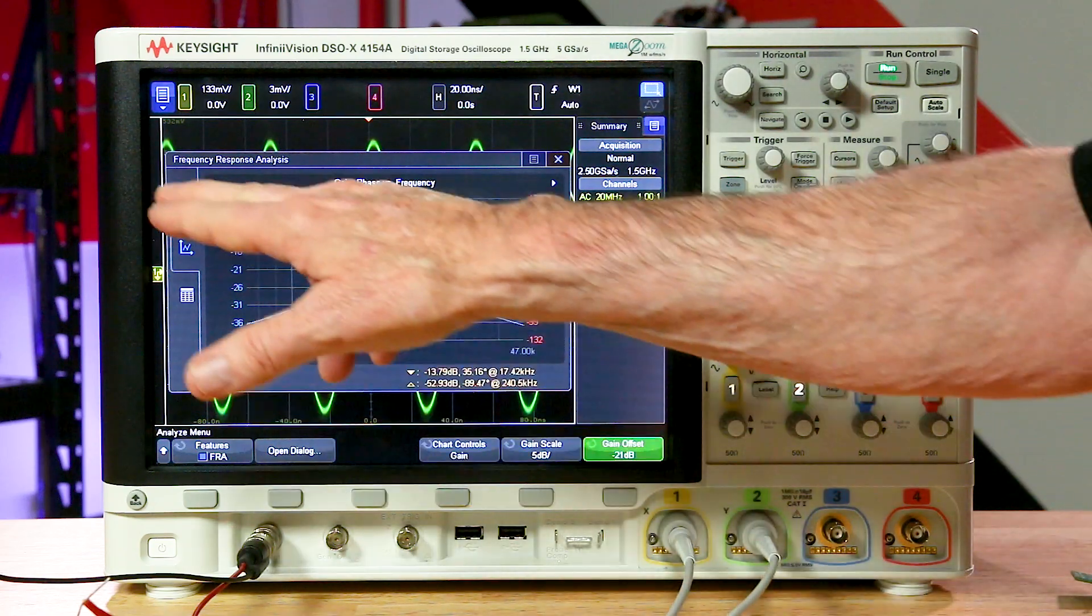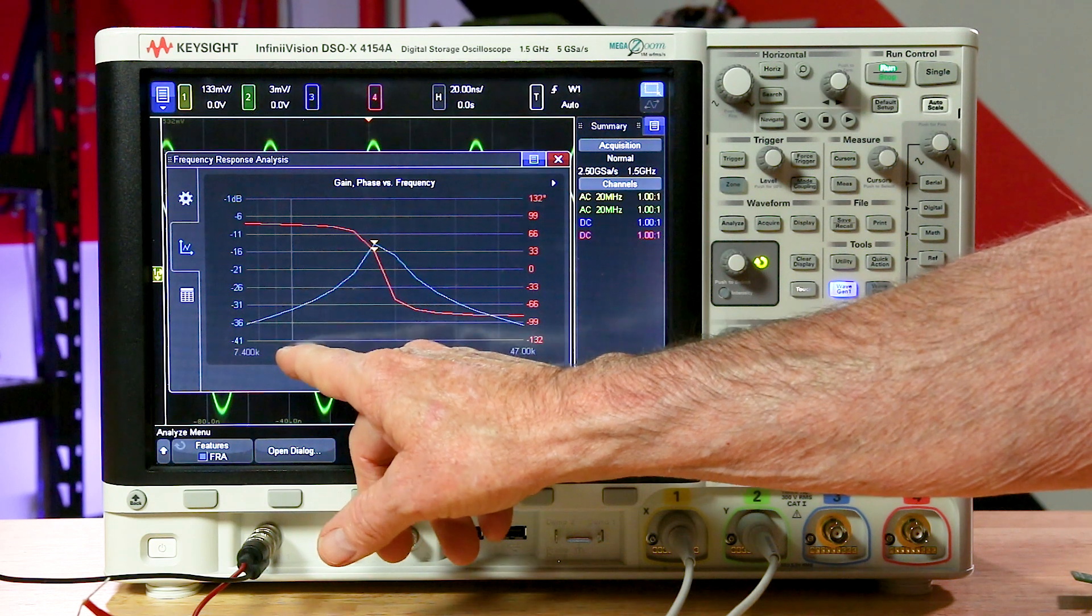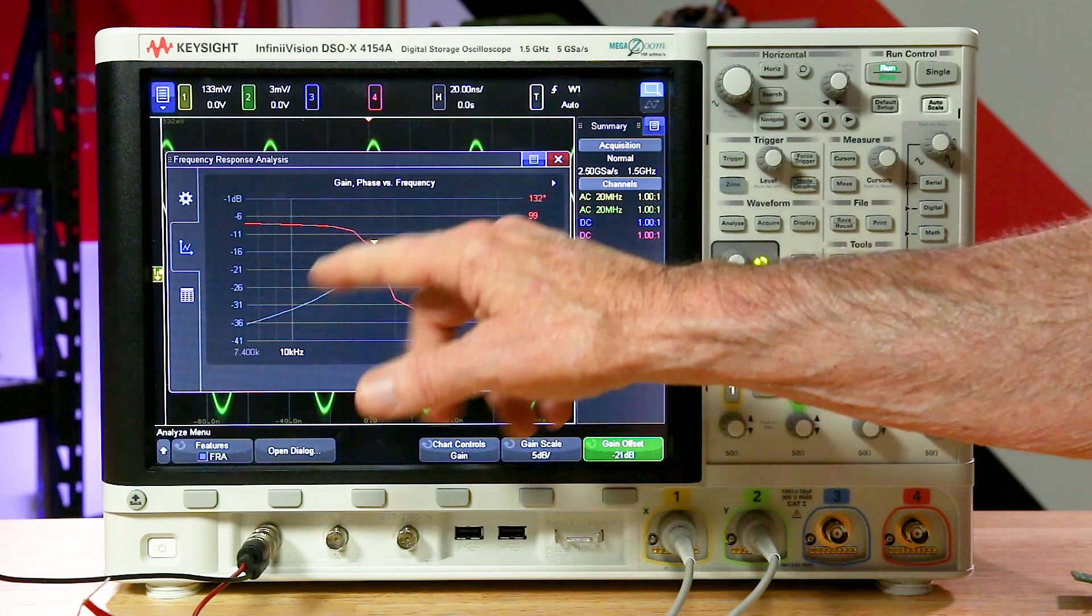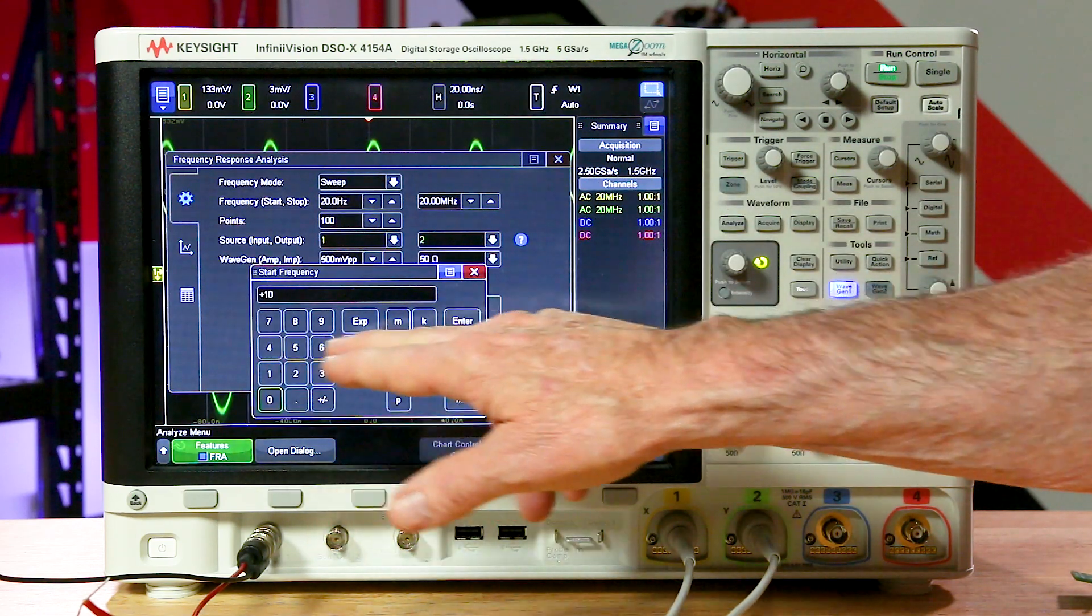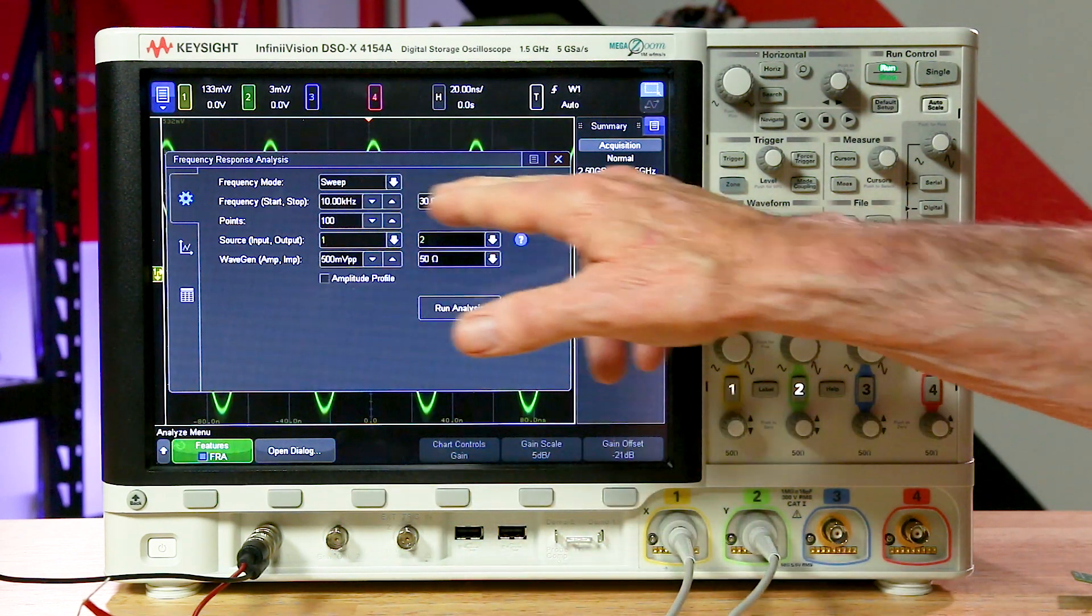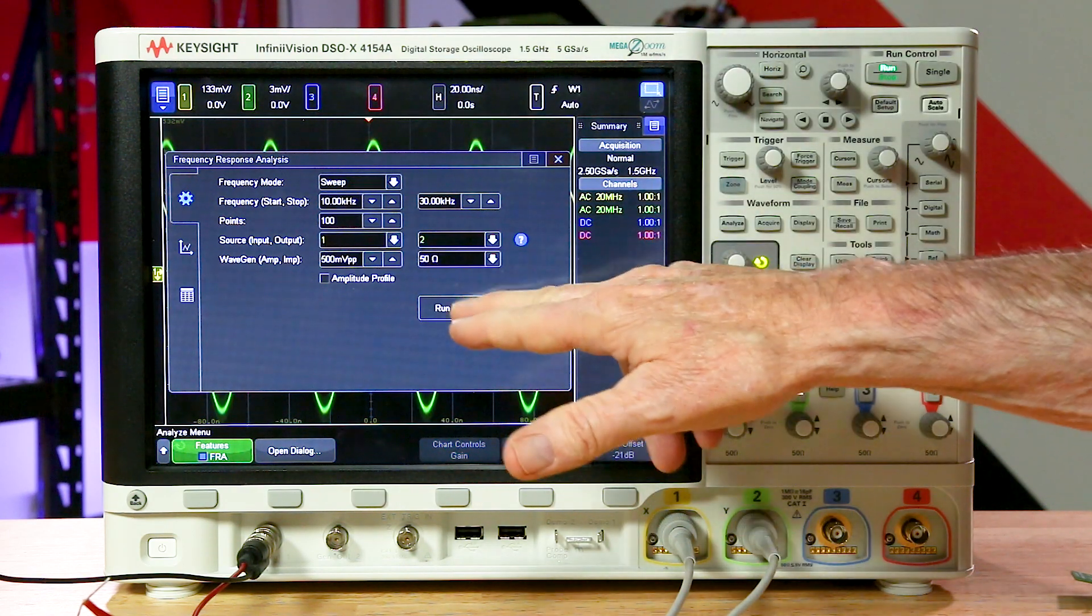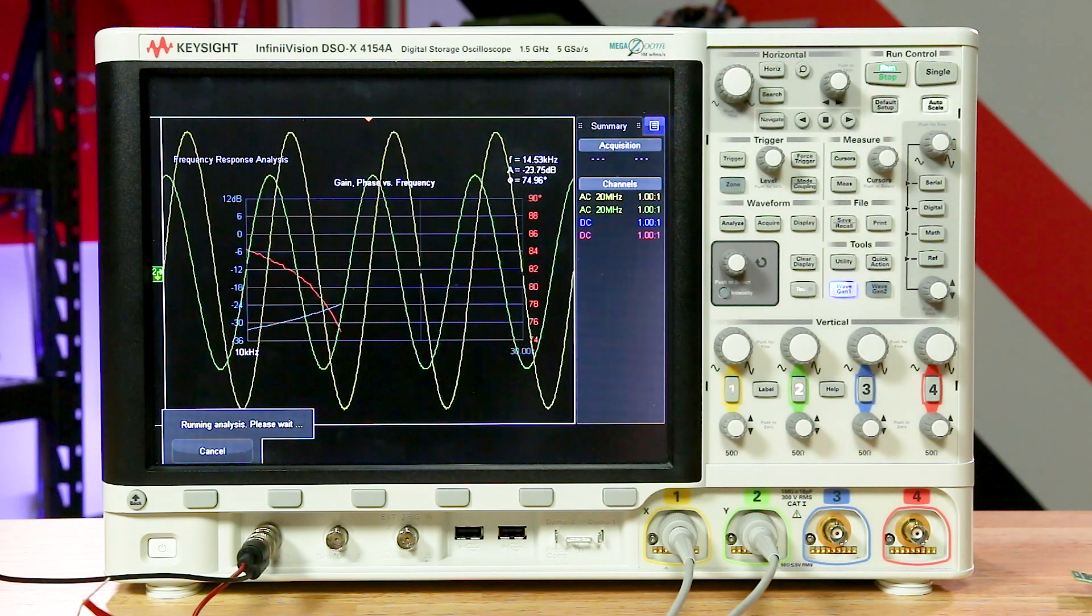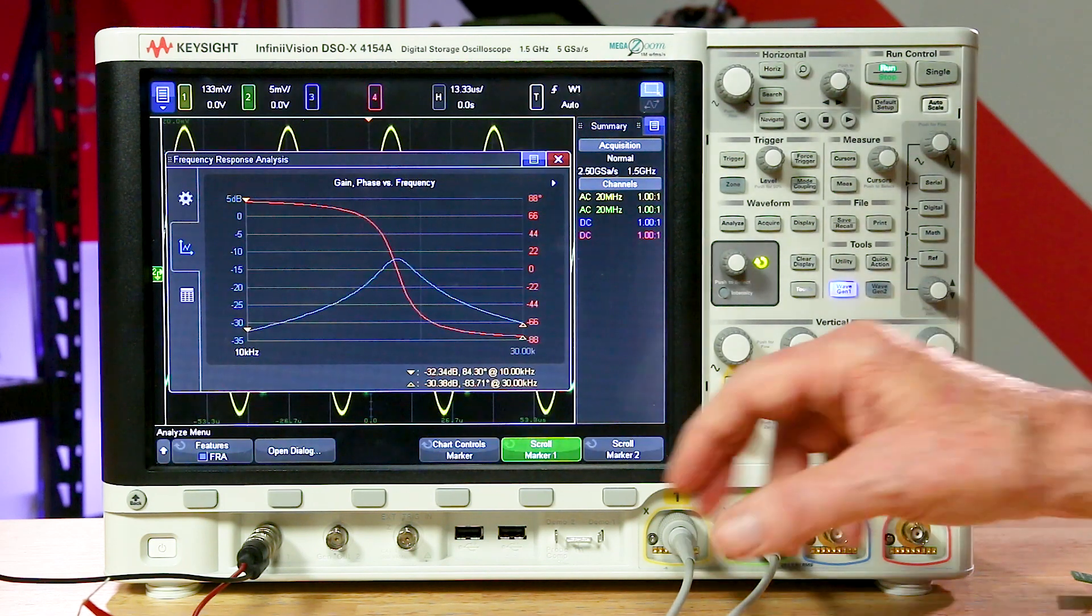You can see here, there's not a lot of resolution around that. So what we can do now, let's go back and run another test. So let's run a test from about 10 kilohertz up to 30 kilohertz and get very high resolution. So I'm going to change this to 10 kilohertz, 30 kilohertz. So this is a very narrow sweep, and let's do 100 points again. I could do 1,000 points.